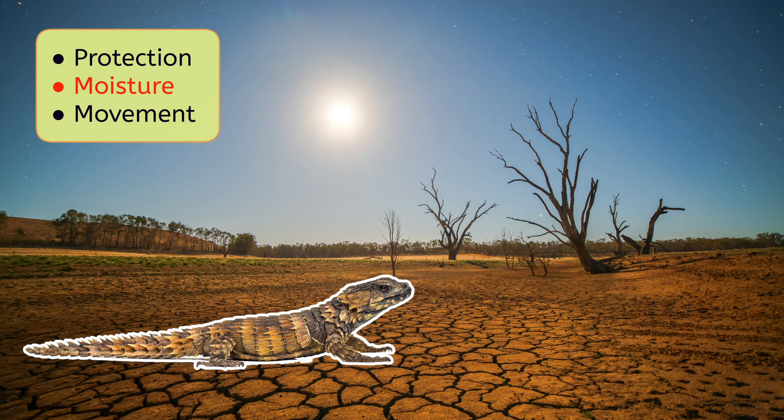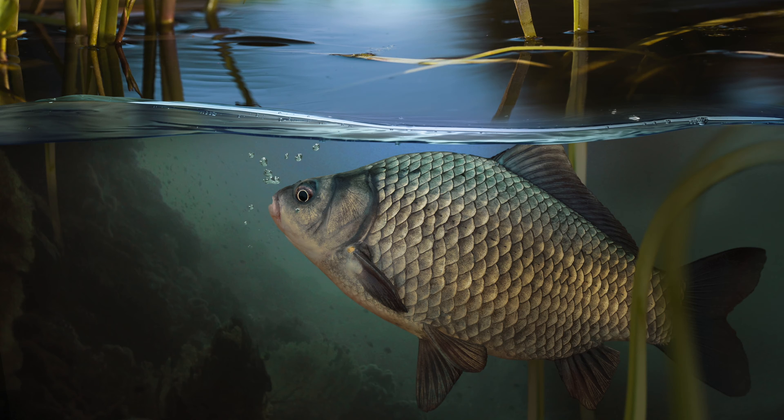Scales also help to hold in moisture or water by keeping it inside an animal's body so it doesn't get too dry in the hot sun. This is especially helpful for land animals who have scales. Fish don't have to worry as much about drying out since they are already underwater.